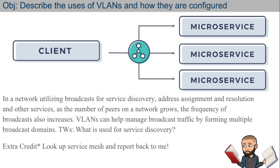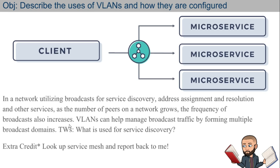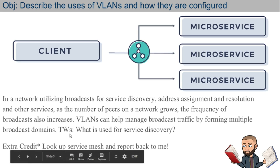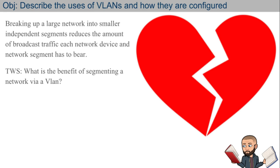This paragraph has a lot of vocabulary. In a network utilizing broadcasts for service discovery, the frequency of broadcasts also increases. A lot of big companies care about service discovery using network broadcast. So we need to keep the number of devices on the network relatively small. What VLANs can do is help us manage this broadcast traffic by forming multiple broadcast domains — breaking up a large network into smaller independent segments reduces the amount of broadcast traffic each network device and segment has to bear.